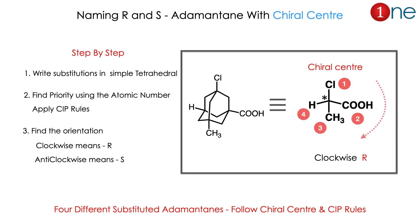Now we will see R and S configuration of adamantane having a chiral center, step by step. If the compound is given, write only the substituents in simple tetrahedral form — then the rest is easy. Give numbering according to CIP rules: higher atomic number gets higher priority. Then find the orientation. If it is clockwise, it is R; anti-clockwise, it is S. In the present case, chlorine gets the highest priority and hydrogen gets the lowest. The clockwise direction gives R. So for four different substituents on adamantane, you follow the normal chiral center CIP rules.